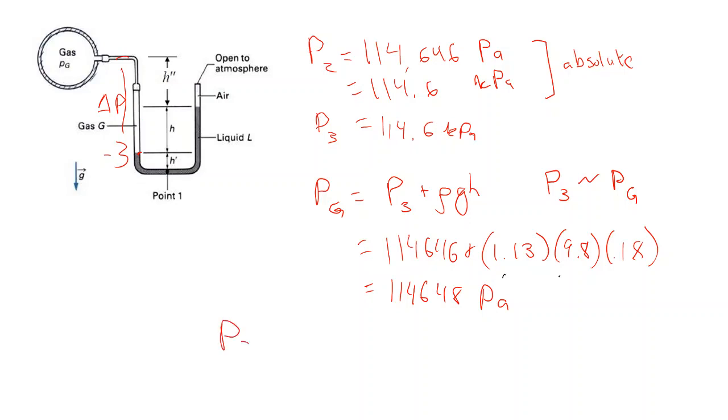So our final answers here, gauge and absolute pressure. Absolute is 114.6 kilopascals, and Pg gauge is going to be that minus atmospheric pressure. So we'll do 114,648 minus 101,325 pascals. That gives us a final gauge pressure of 13.3 kilopascals.